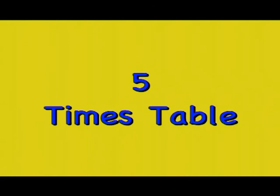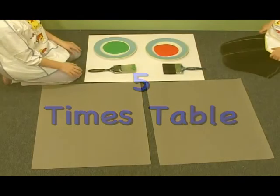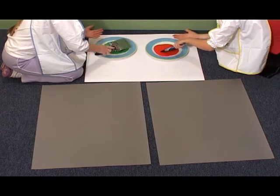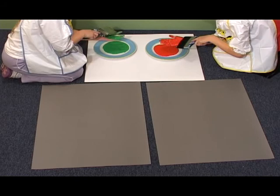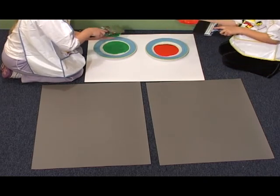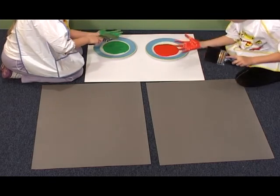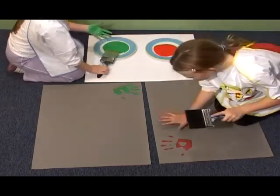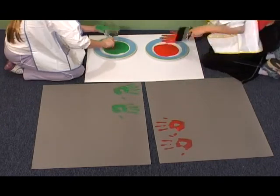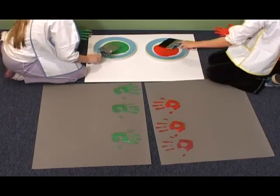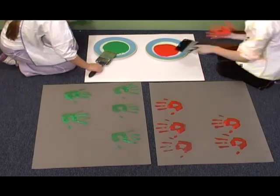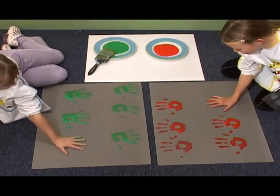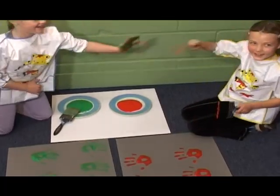The Five Times Table. You can make handprints to represent the Five Times Table. Each handprint has five fingers. Paint your hand and then press it onto a piece of card. A finished handprint with five fingers.